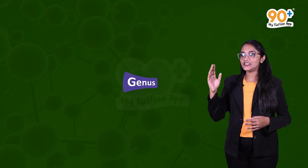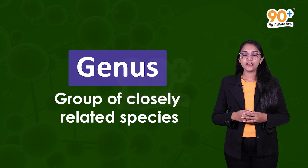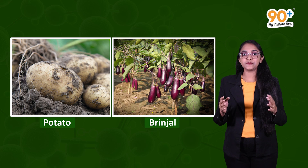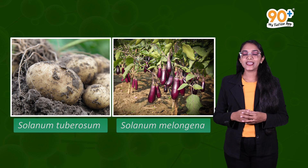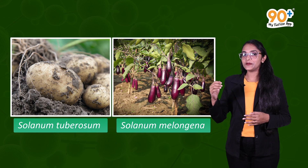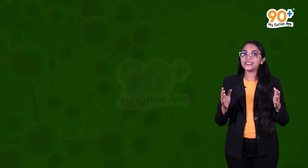The next taxonomic category is genus — a group of closely related species. For example, potato and brinjal are different species, but they belong to the same genus Solanum. Potato is Solanum tuberosum and brinjal is Solanum melongena.